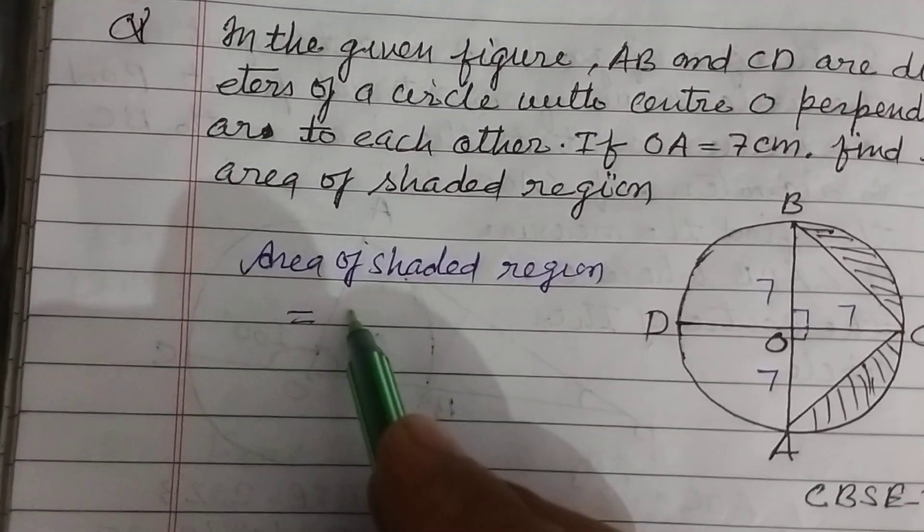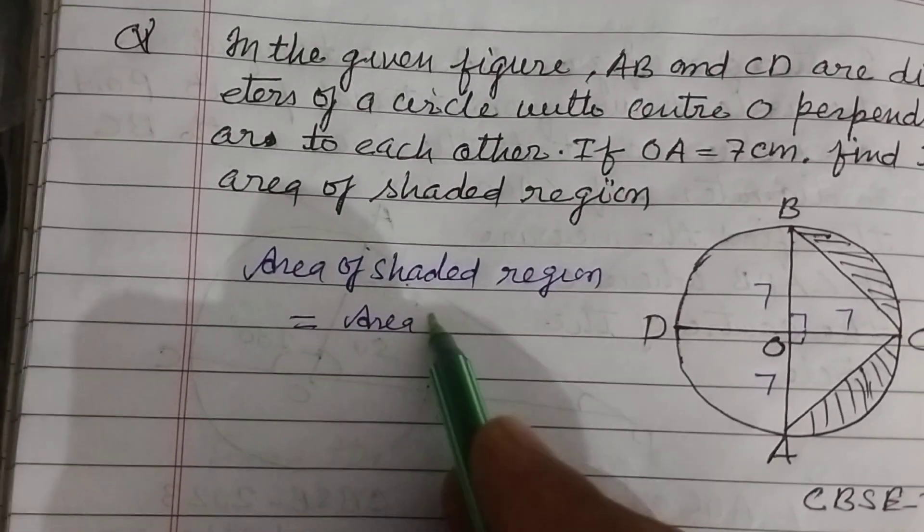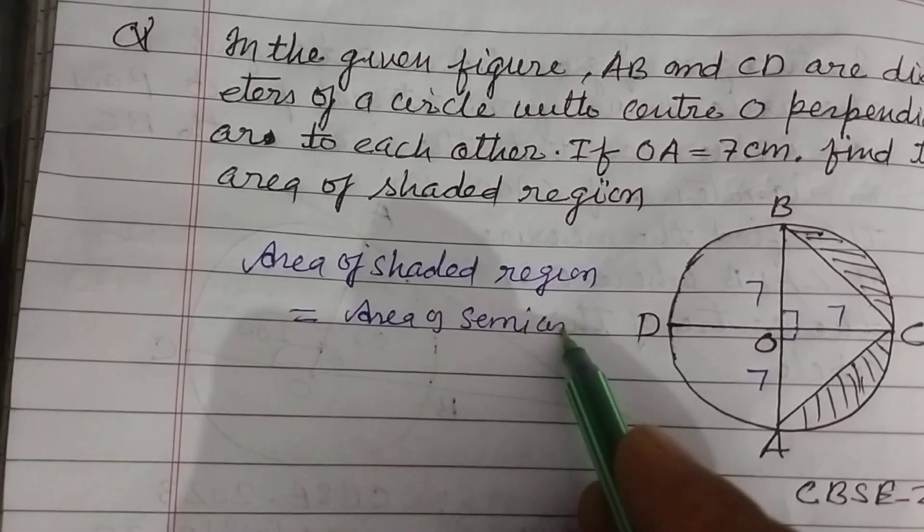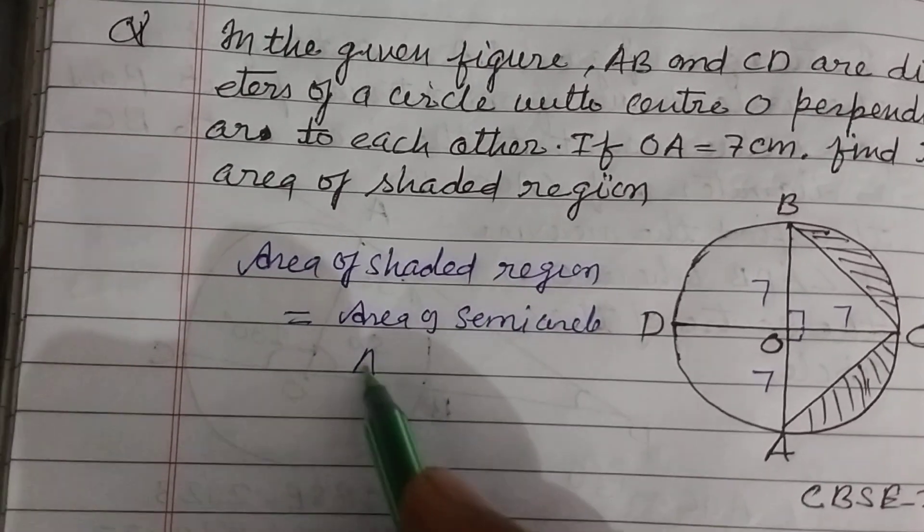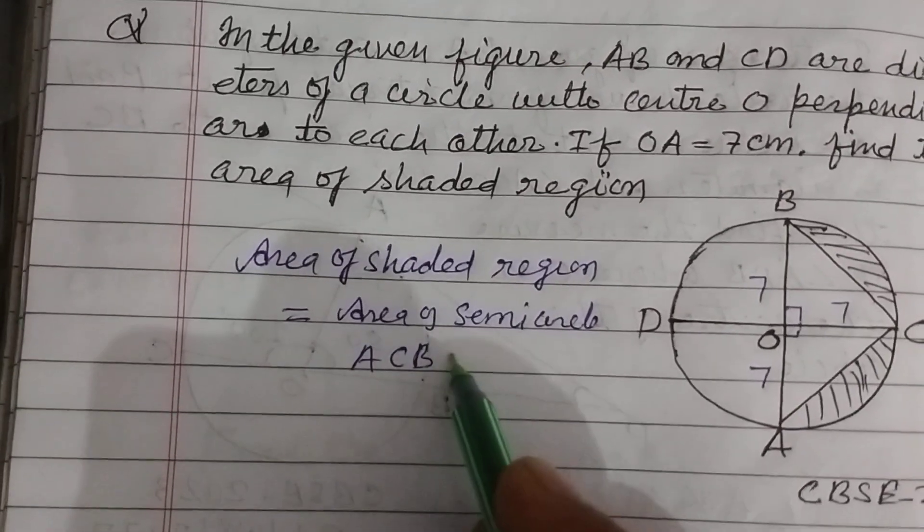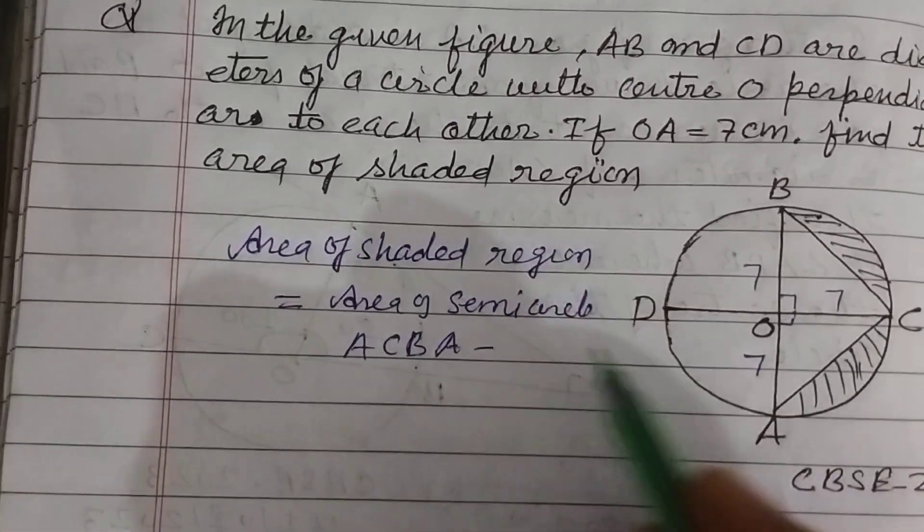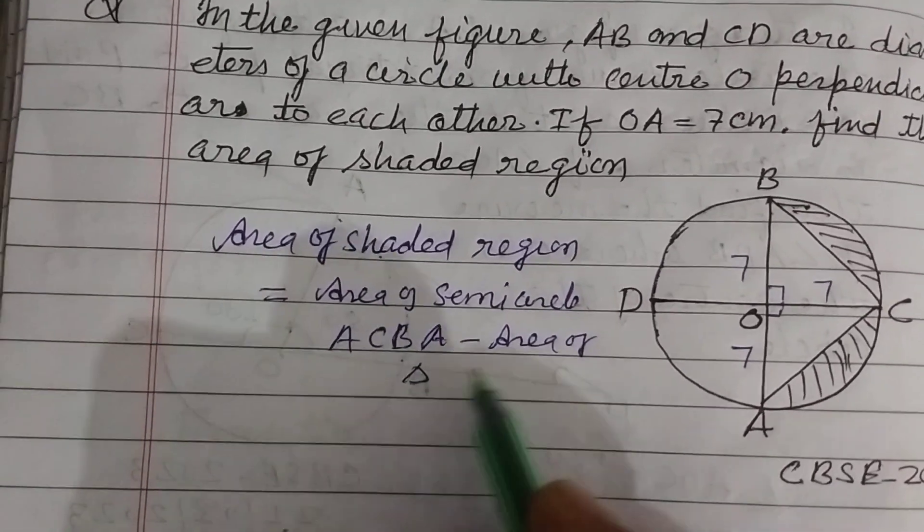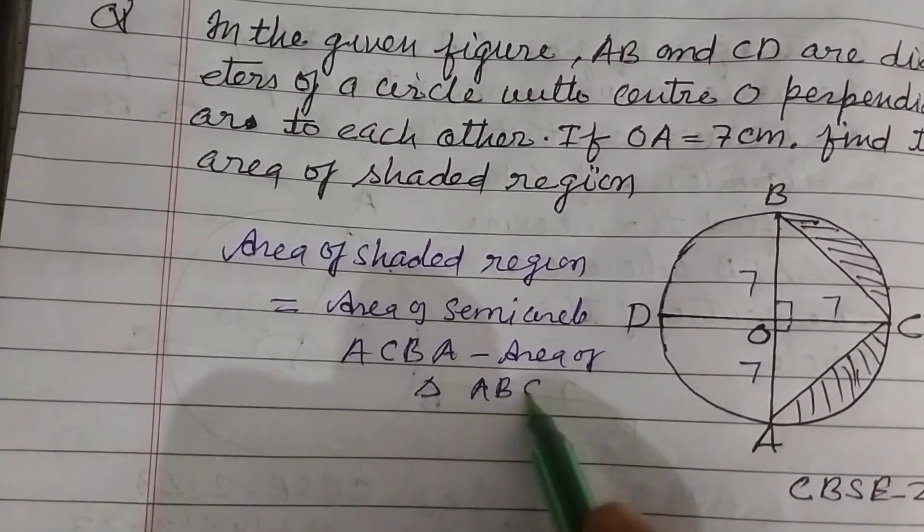Area of shaded region equals area of semicircle ACB minus area of triangle ABC.